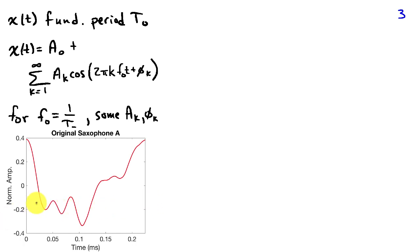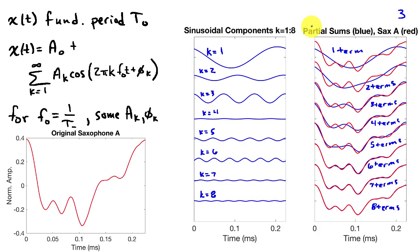What we're going to do is show that we can represent this wave shape by a sum of sinusoids. And it turns out, in this case, we don't need very many sinusoids to represent this quite accurately. So on the right-hand side here, I'm showing two panels.